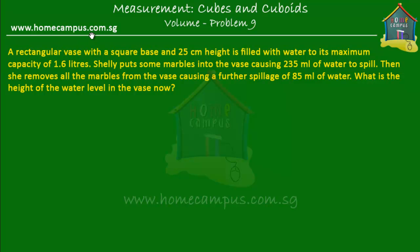Hello and welcome to homecampus.com.sg. Let's solve this word problem on volume of cubes and cuboids. A rectangular vase with a square base and 25 centimeters height is filled with water to its maximum capacity of 1.6 liters. Shelly puts some marbles into the vase, causing 235 milliliters of water to spill. Then she removes all the marbles from the vase, causing a further spillage of 85 milliliters of water. What is the height of the water level in the vase now?